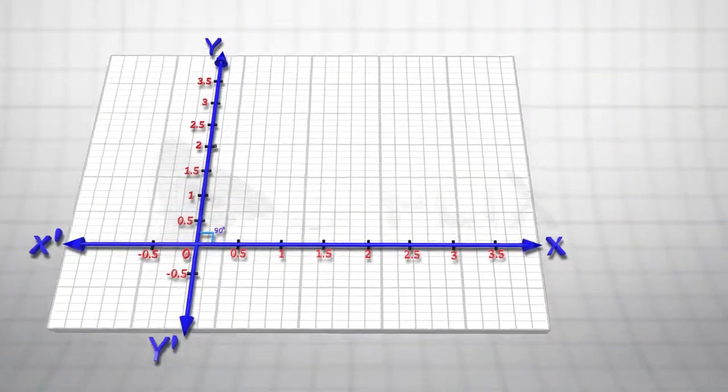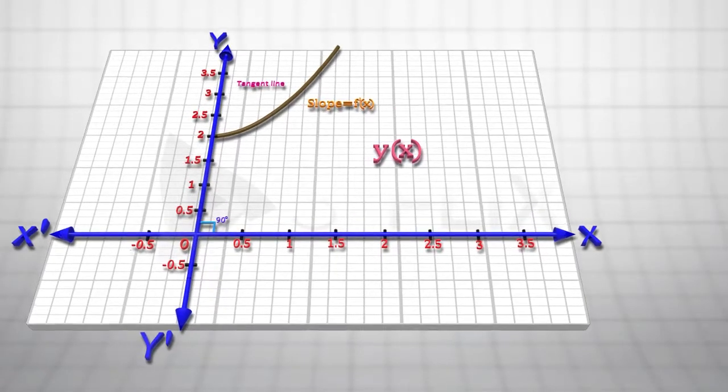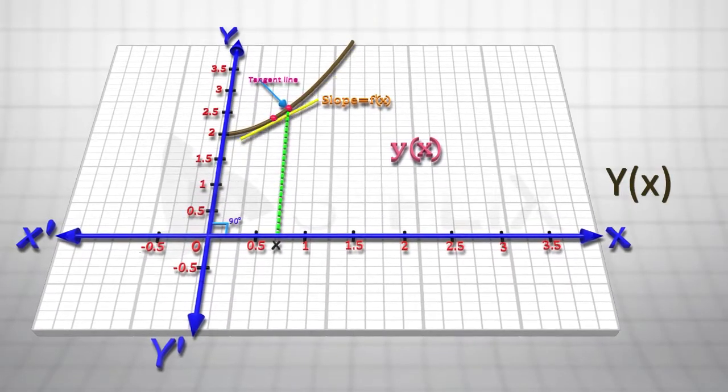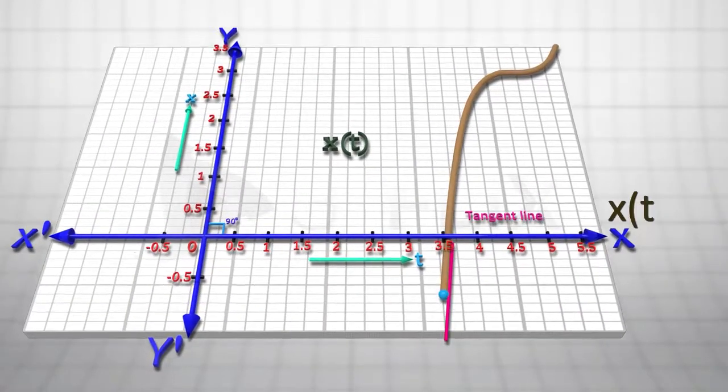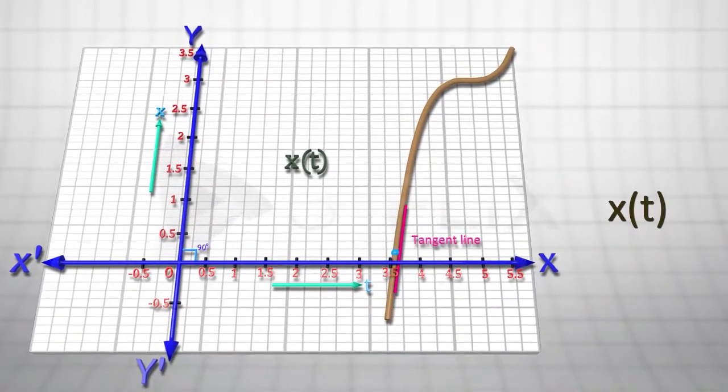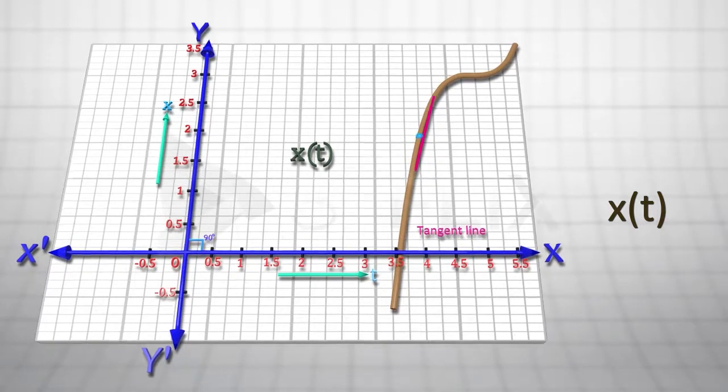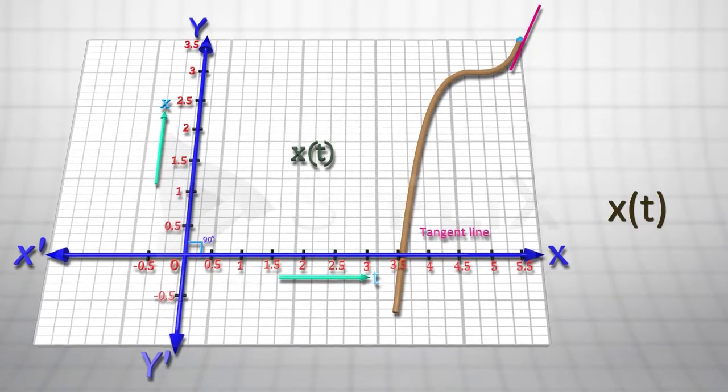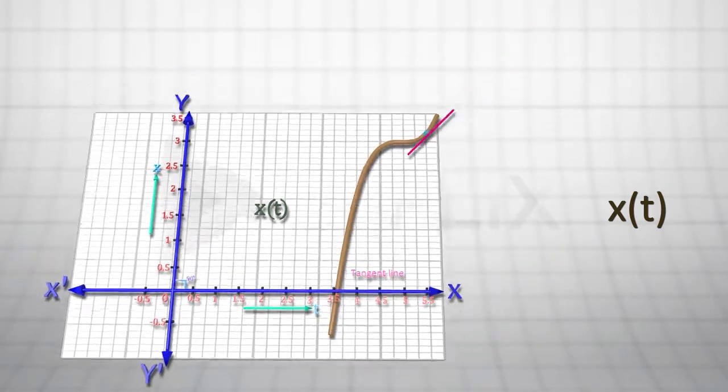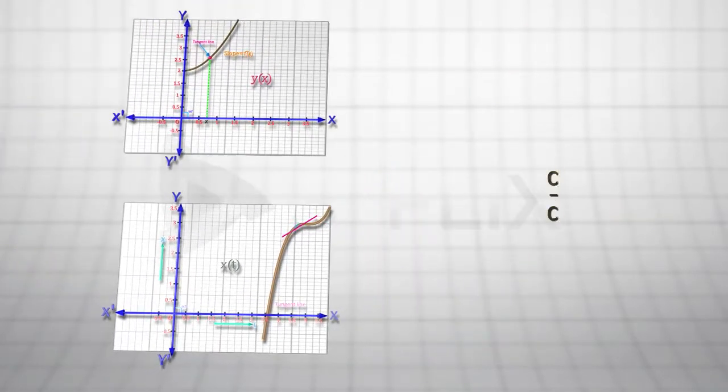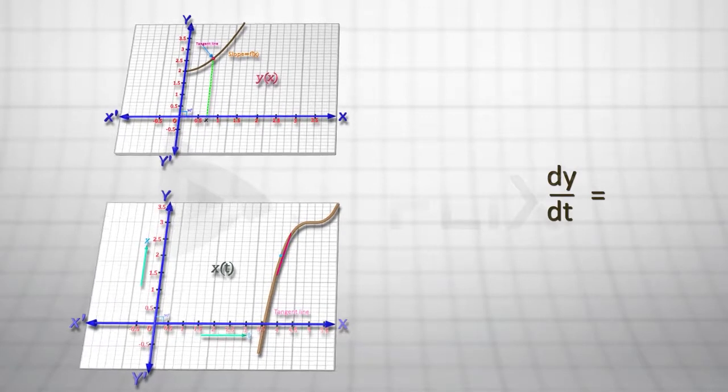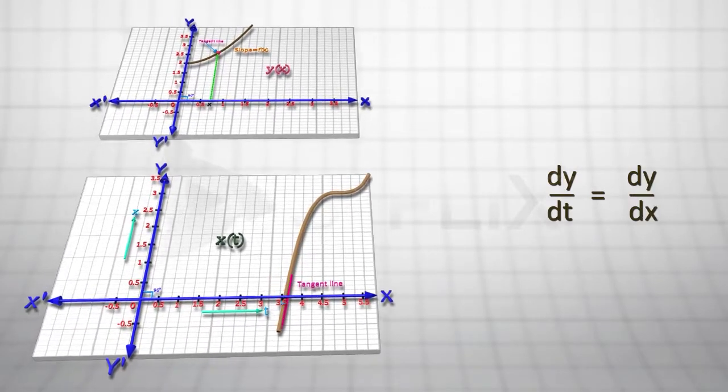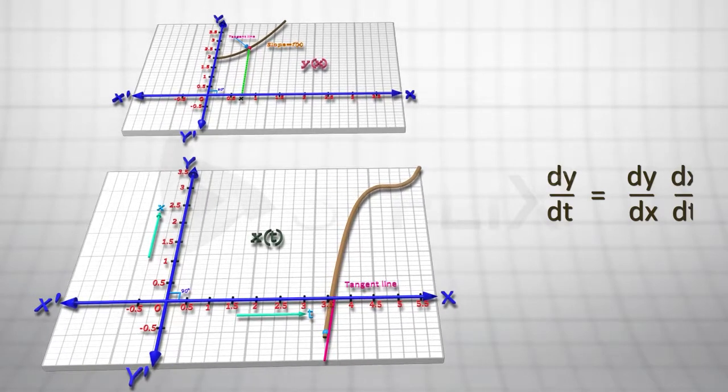Let's assume that a variable quantity y depends on another variable quantity x, and x depends on yet another quantity t. Then, the rate of change in y is equal to the product of these two rates of change, and therefore, dy by dt is equal to dy by dx into dx by dt.